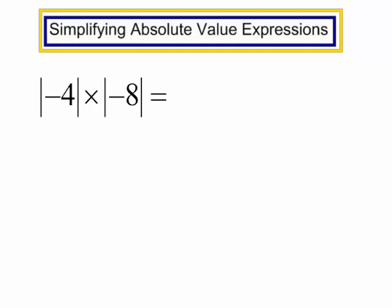Now we have a multiplication problem. The absolute value of negative 4 times the absolute value of negative 8. Let's simplify those absolute value expressions first. The absolute value of negative 4 is just 4, times the absolute value of negative 8, which is 8. And 4 times 8 is 32.